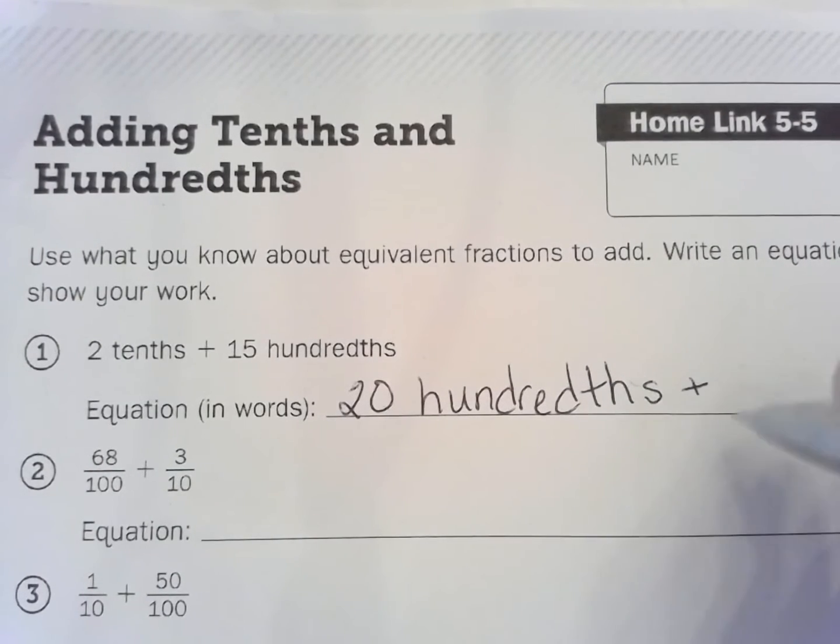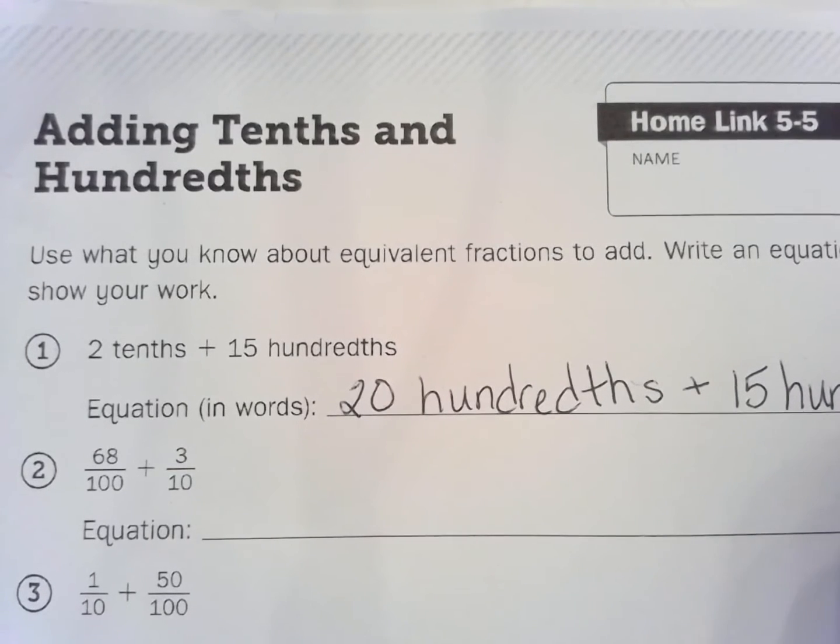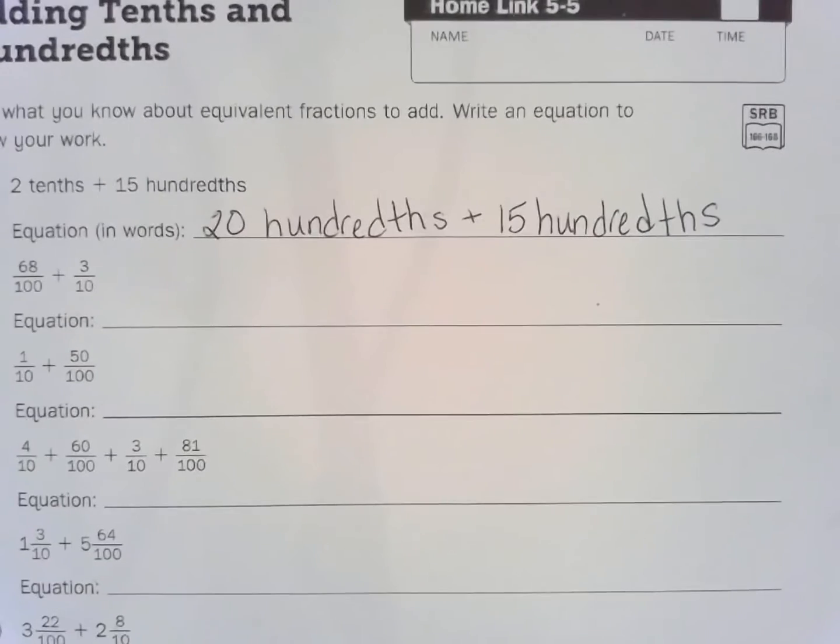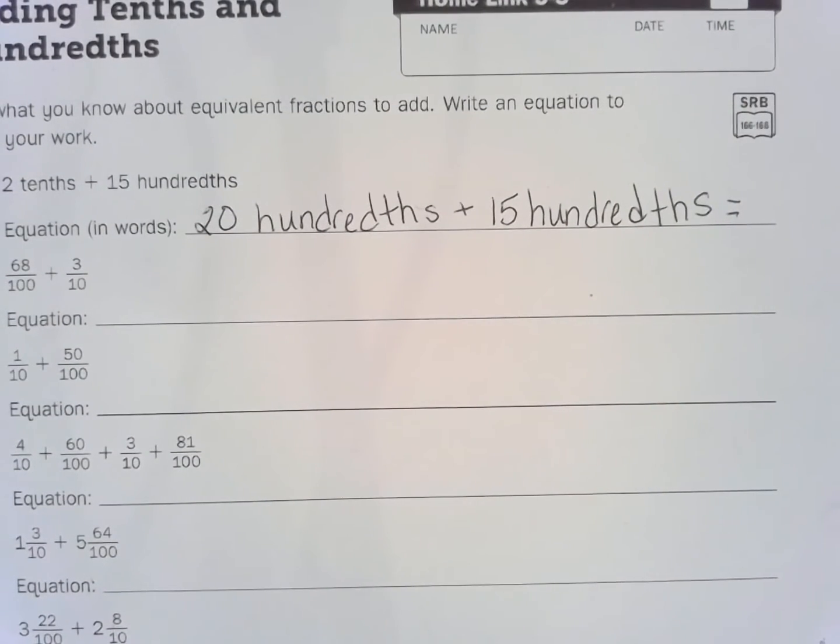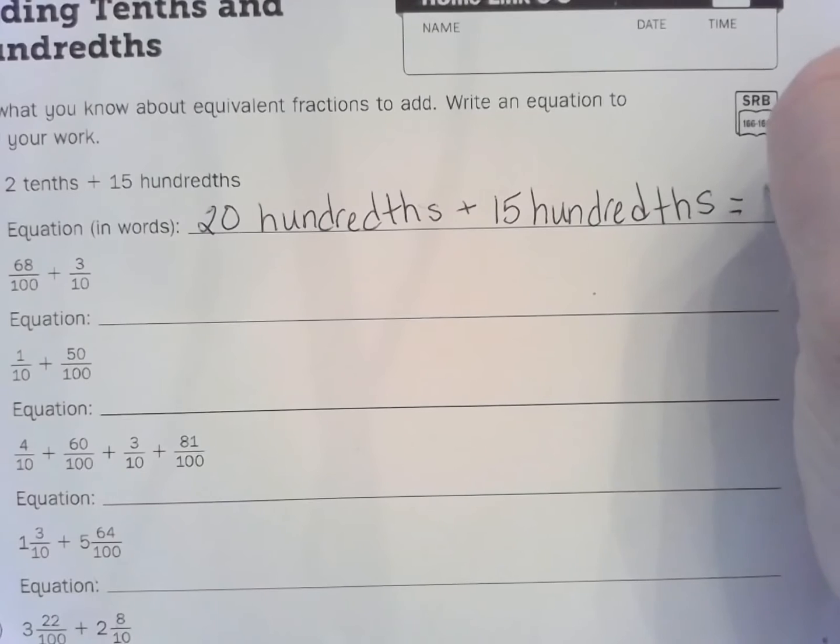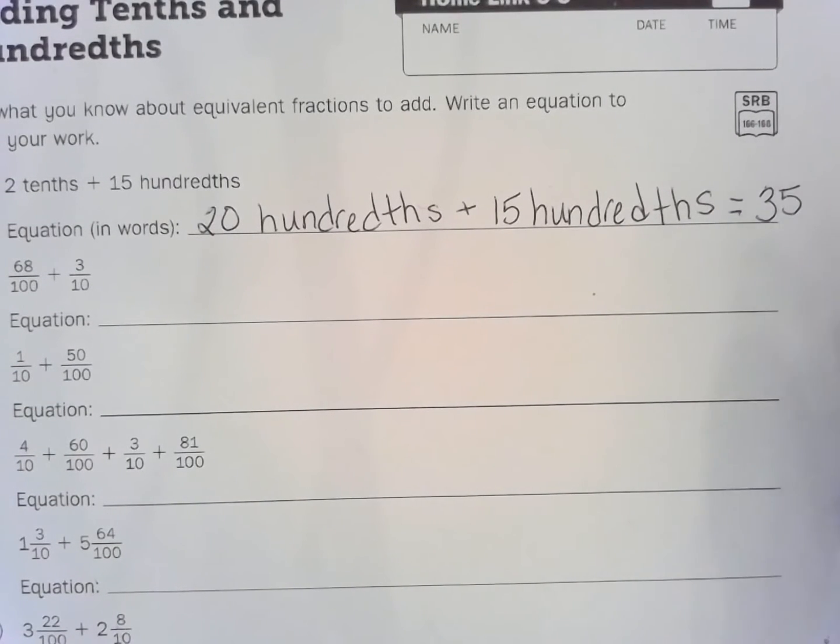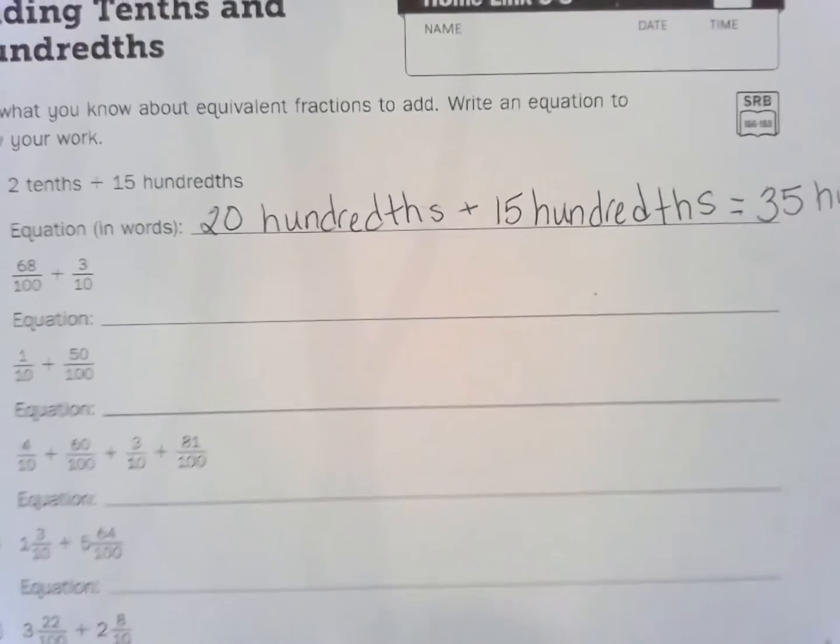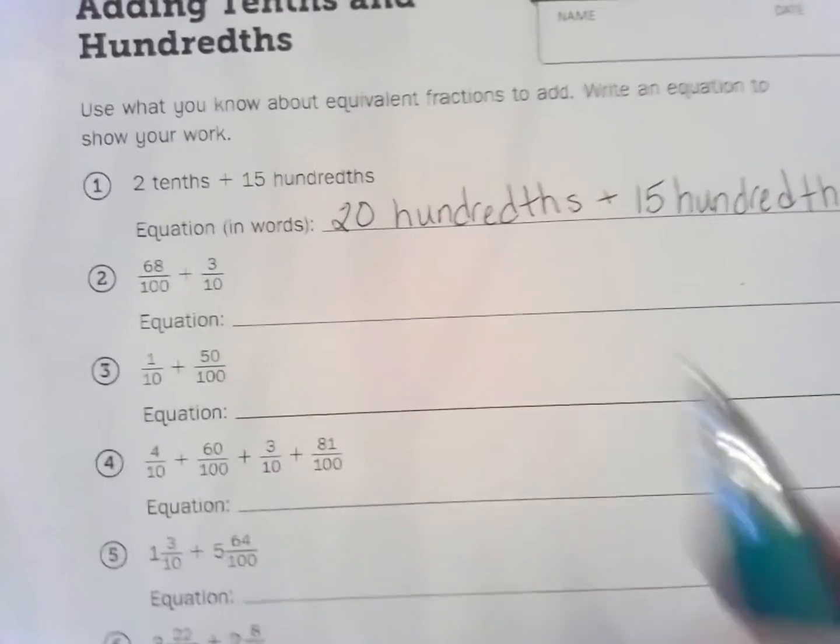Plus fifteen hundredths. Hang on, guys can't really see that can you? There we go. Equals, so 20 hundredths plus 15 hundredths equals, hmm, what does it equal? 20 plus 15 is 35, right? 35 hundredths. And I had to write kind of small because it kind of went off the page, so that's okay. You can always go write it down under here too, that's okay.